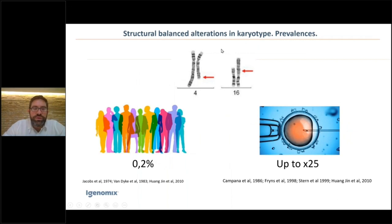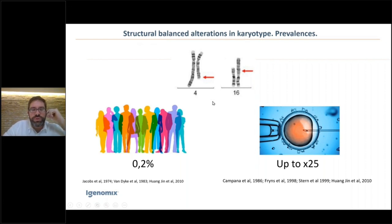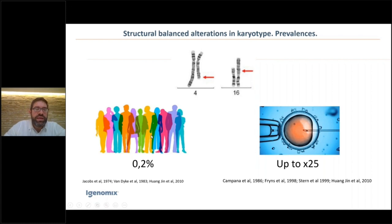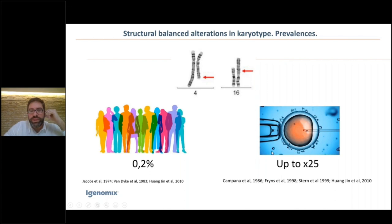Extended conditions are important because we can include a new population not previously covered: carriers of structural balanced alterations — reciprocal translocations, inversions — who were not included before. This is prevalent: reciprocal translocations occur in 0.2% of the population — 1 in 500 people, or 1 in 250 couples. These couples are at risk of miscarriages and ongoing pregnancies with congenital birth defects. This risk could be up to 25-fold greater in IVF patients.